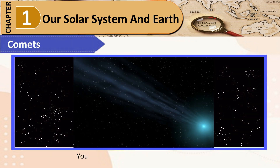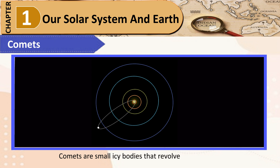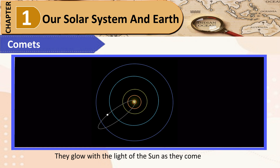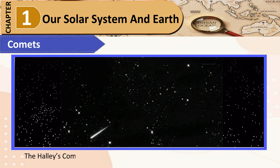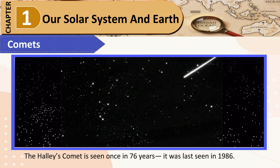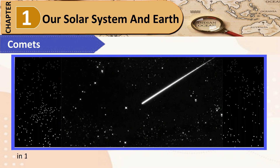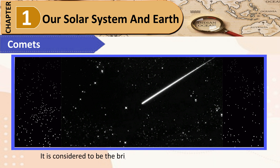Comets: Comets are small icy bodies that revolve around the Sun. They glow with the light of the Sun as they come close to it. Halley's Comet is seen once in 76 years and was last seen in 1986. More recently, in 1996, a Japanese astronomer discovered the Hyakutake Comet, named after him, considered to be the brightest comet seen over the last 20 years.